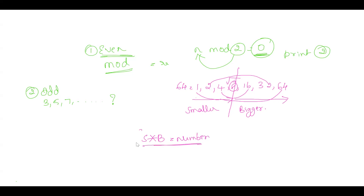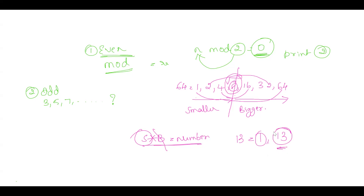Since my job is only to find the smaller factor, I can completely ignore the bigger factor. I know the very first factor which comes after 1 will be a small factor, so I have to iterate only up to the square root of the given number. Let me take a prime number, 13 — its factors are 1 and 13. The moment I pass 1, if I go up to the square root of 13 and find no other divisor apart from 1, I can immediately say it is a prime number, because if it were not prime there would have been another divisor.